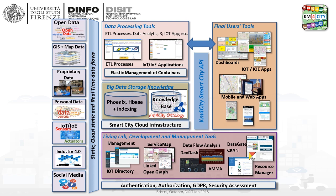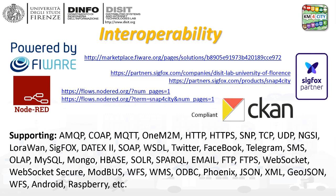In the middle, the KM4City Smart City APIs are the main entry point to interoperate with all tools in the field, like dashboards, mobile, web, and IoT applications. The system is also officially powered by FIWARE, is a partner of Sigfox and Node-RED, and is compliant with FIWARE and many different protocols listed in the slide.